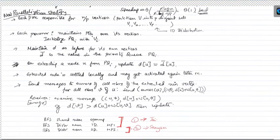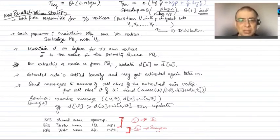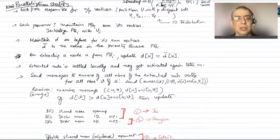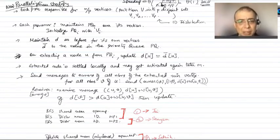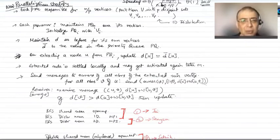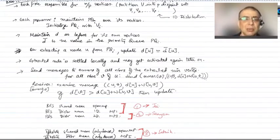We looked at this new parallelization strategy: we are going to do a 1D distribution of the vertices into sets V1, V2, ..., VP, and each processor is going to maintain its own priority queue. We have data structures D and D-bar. D refers to the currently known tentative shortest distance, and D-bar is the value which is actually in the priority queue. Every time we extract a minimum out of the priority queue, that vertex becomes settled, and we believe that D value is final. So think of D-bar as a temporary value floating in the priority queue, and once a vertex is pulled out, that D-bar becomes D.